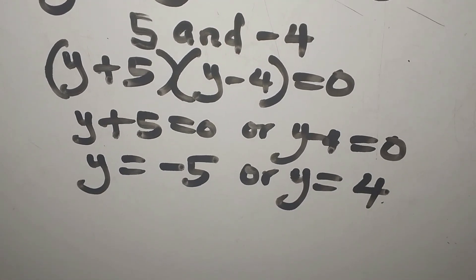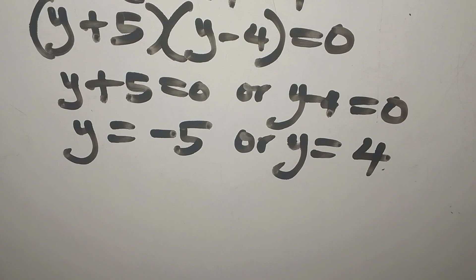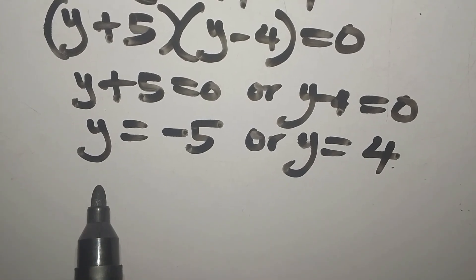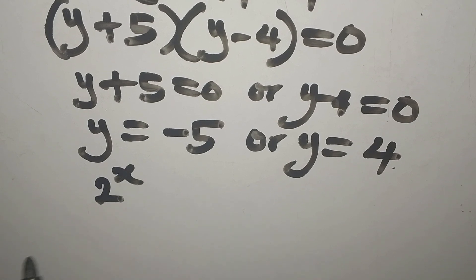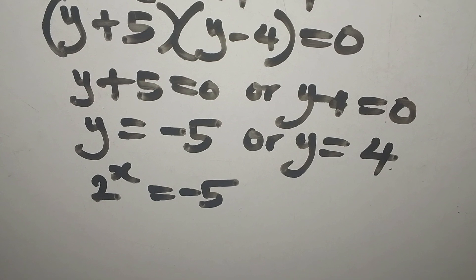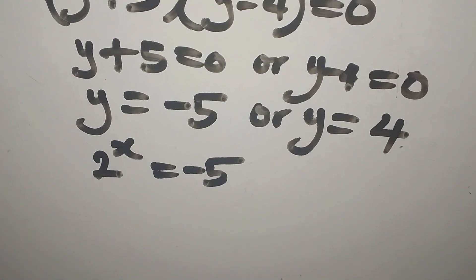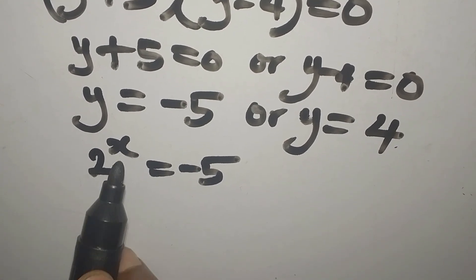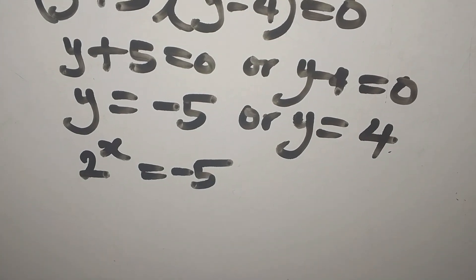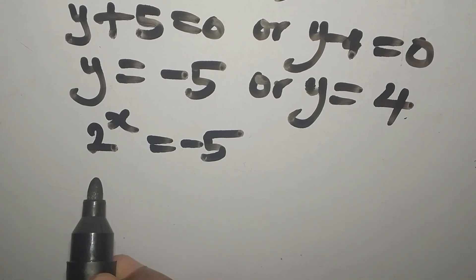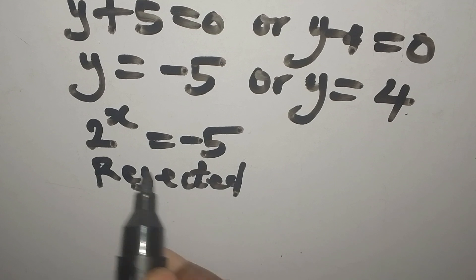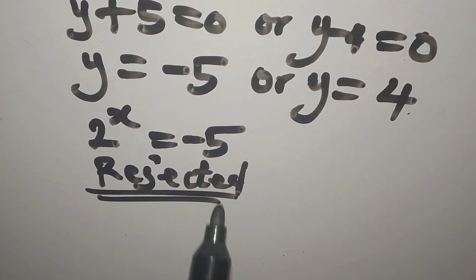So this means that we are going to be having our y in place of y here. We're going to write 2 to the power of x, and that is equal to negative 5. Now let's consider this alone for now. Do you think this is possible? It's not possible because there's no real value of x that will give us negative 5 on the other side. So whatever that we have here has to be rejected.